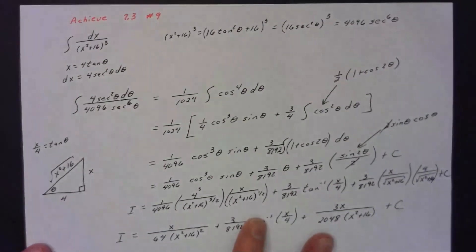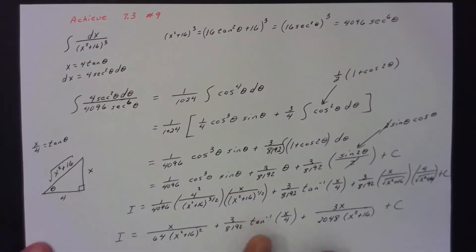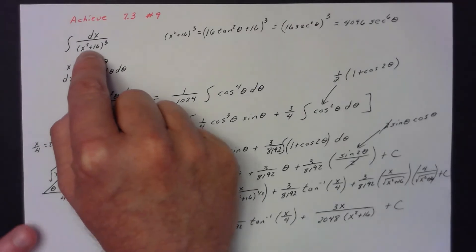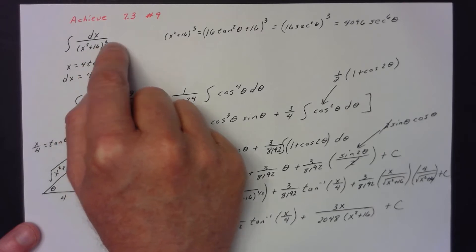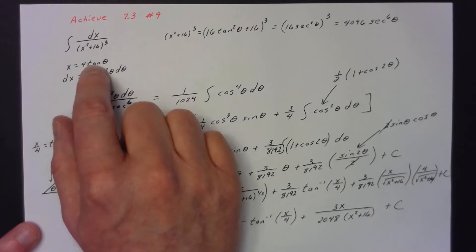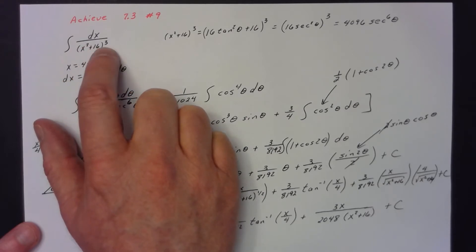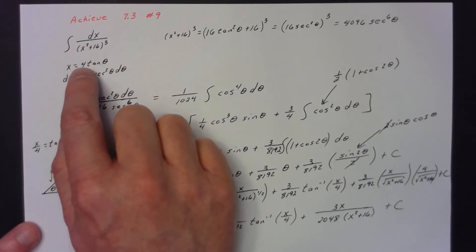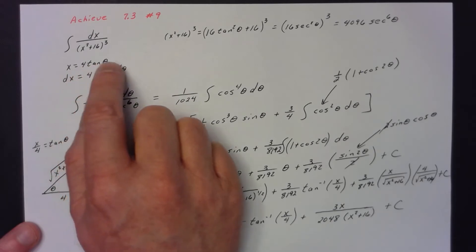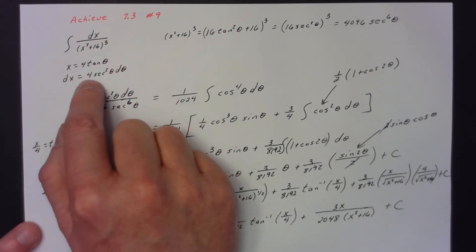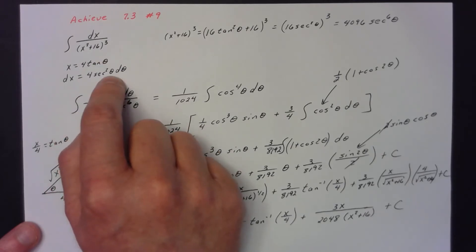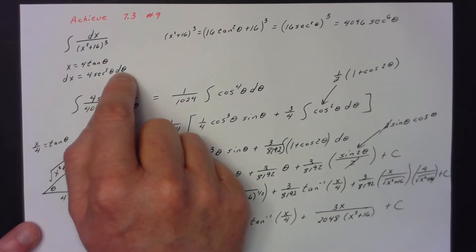For number 9, you'll see a problem something like the integral of dx over (x² + 16)³. Anytime it's x² + a², you let x equal a tan θ. In this case, a is 4. dx — the derivative of 4 tan θ — is 4 sec² θ dθ.